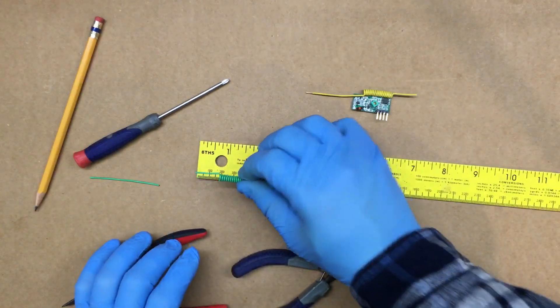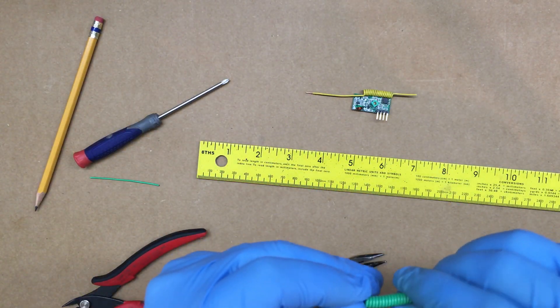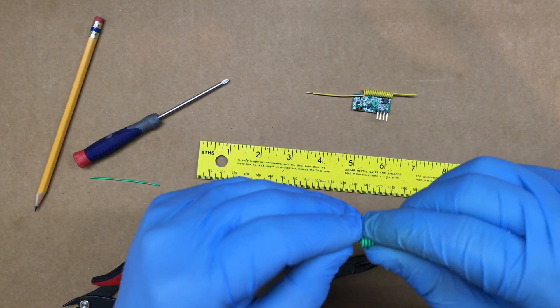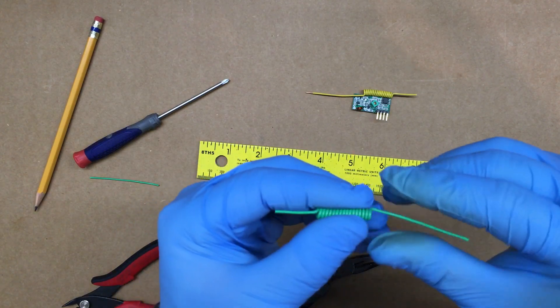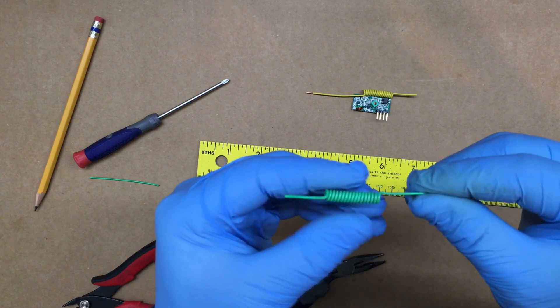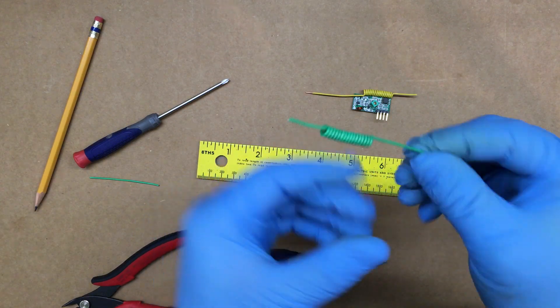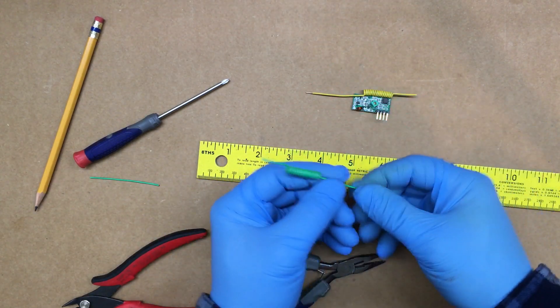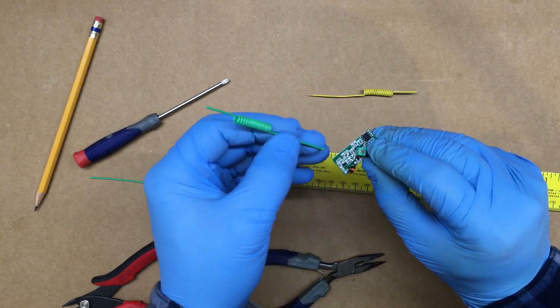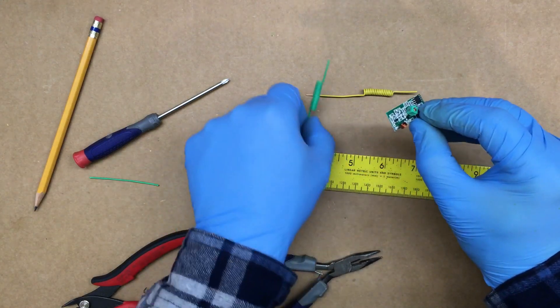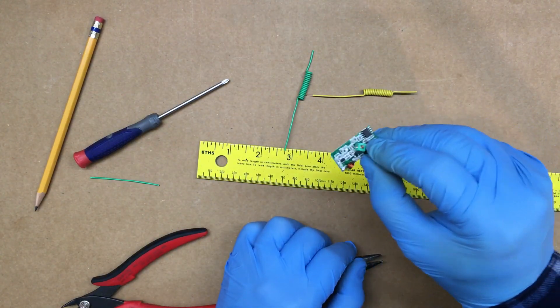And there you have it. You have yourself a little antenna that can be soldered on there, and hopefully it receives a lot better.